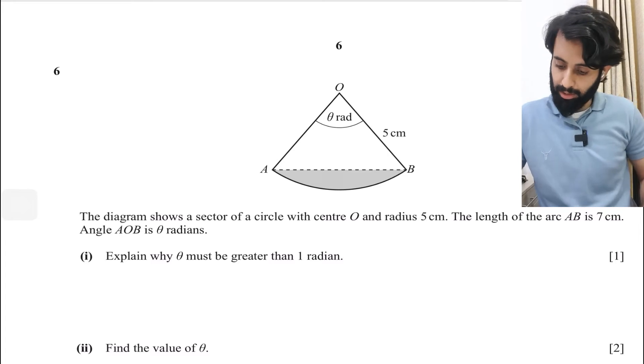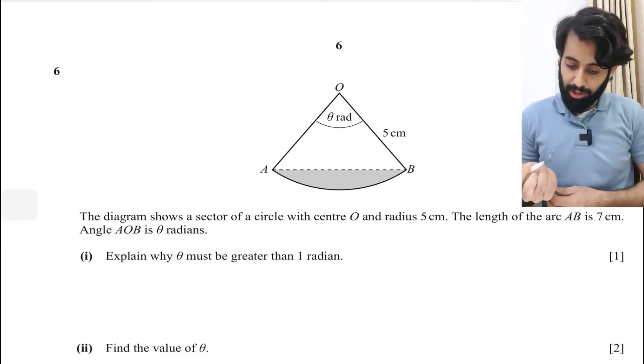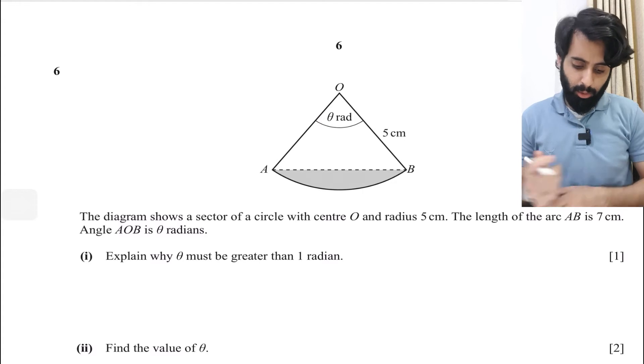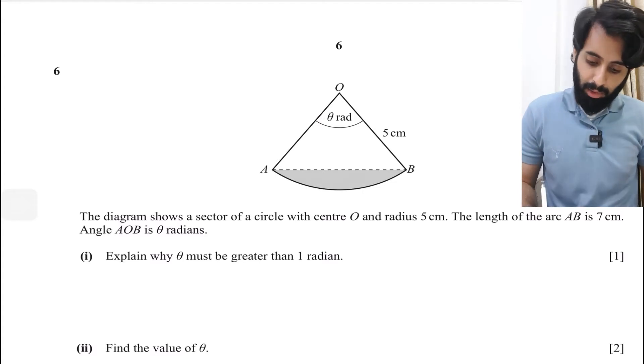Let's get straight to it. Part one says explain why θ must be greater than 1 radian. This is a one mark question, so let's see what logical explanation we can come up with. But first, let's read the question. It says the diagram shows a sector of a circle with center O and radius 5 cm. The length of the arc AB is 7 cm.